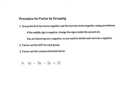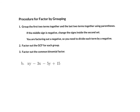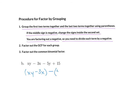Let's look at a second example. Again, we start by grouping the first two terms together. We do need to be careful here because the middle sign is negative. We want to change the signs inside the second set — note we are factoring out a negative, essentially. We can't just put parentheses wherever we want without making sure we take care of that. When we are factoring out a negative, we do need to divide each term by the negative. So we group the first two together and get xy minus 3x, minus — and here we need to be careful — we change this to minus 15 because by putting in the parentheses, we are basically factoring out the negative.